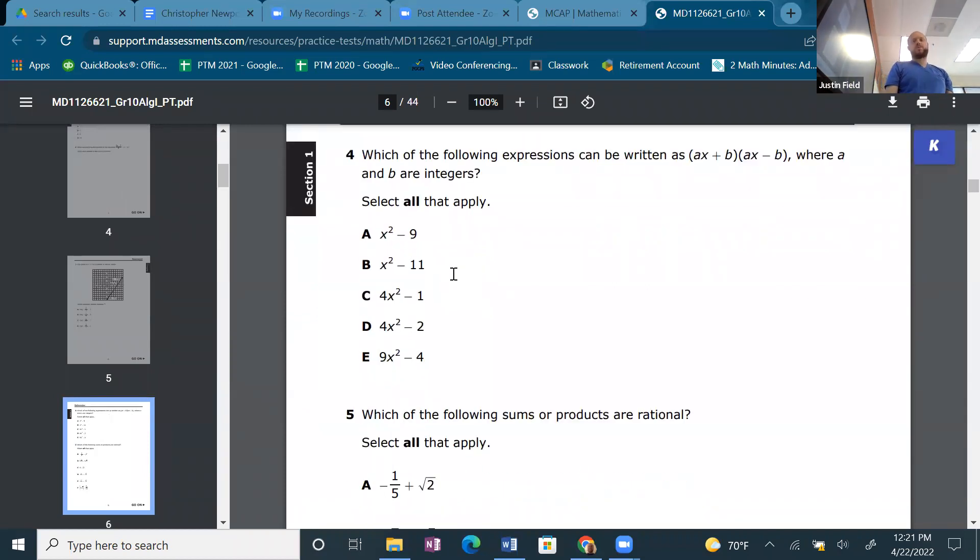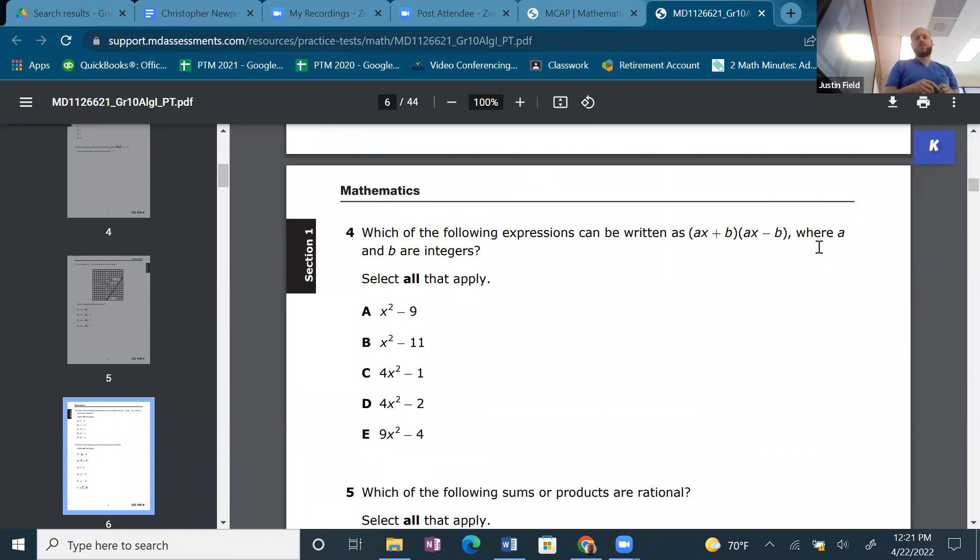Which of the following expressions can be written as (Ax + B)(Ax - B), where A and B are integers? Oh, okay. Alright, alright. So I see that this is the difference of squares.